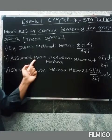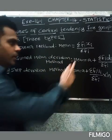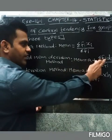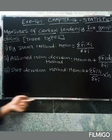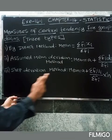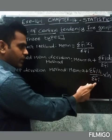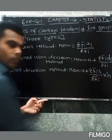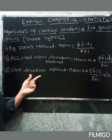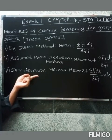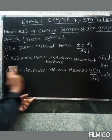Next is the second method — assumed mean deviation method. The formula is: mean equals a plus summation fi into di, divided by summation fi. The third method is step deviation method: mean equals a plus summation fi into ui, divided by summation fi, into h.